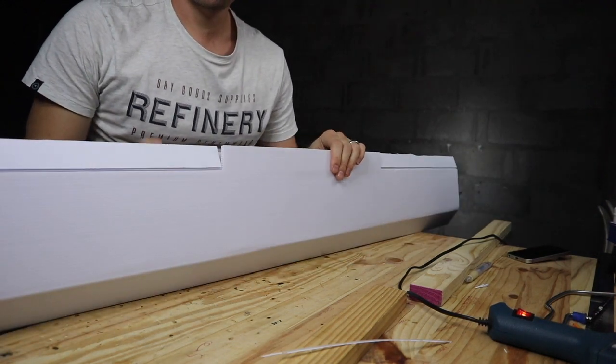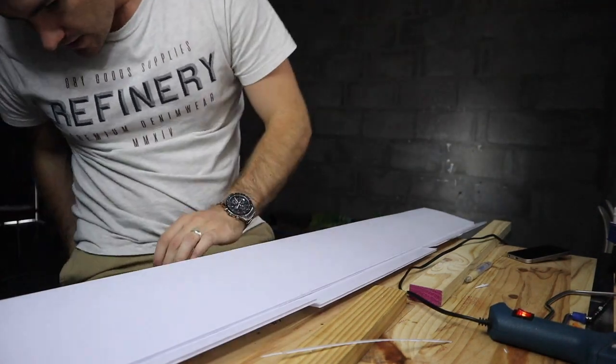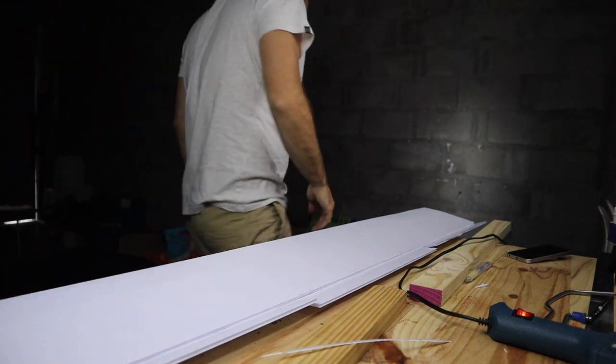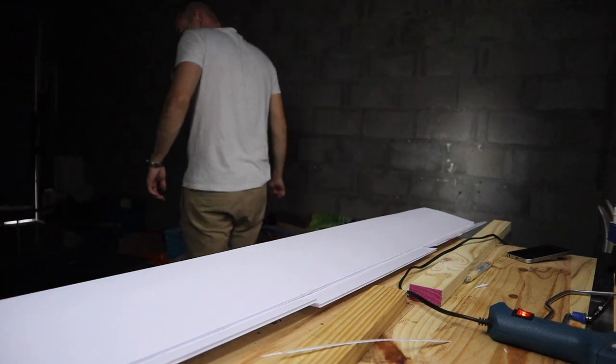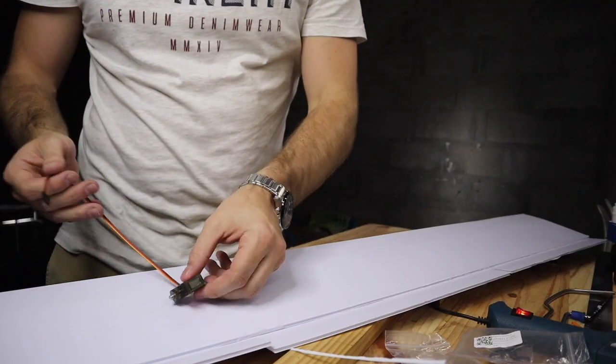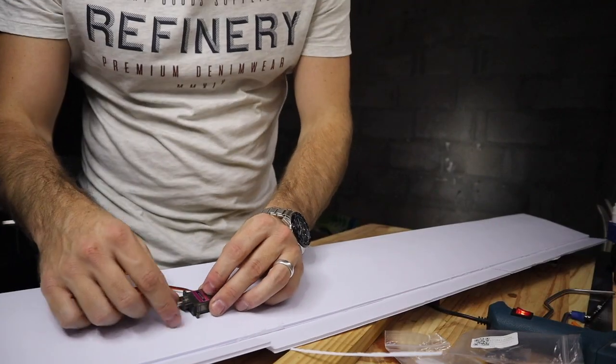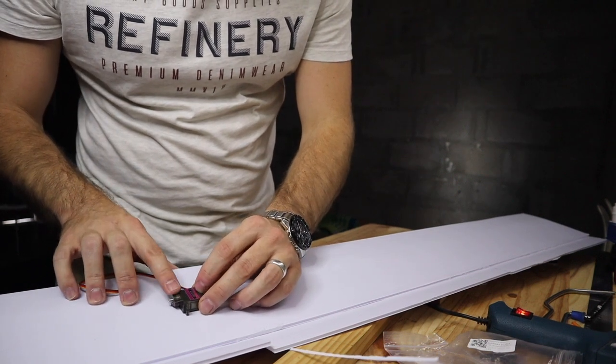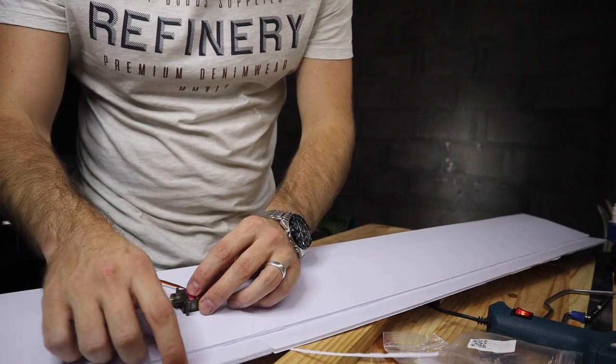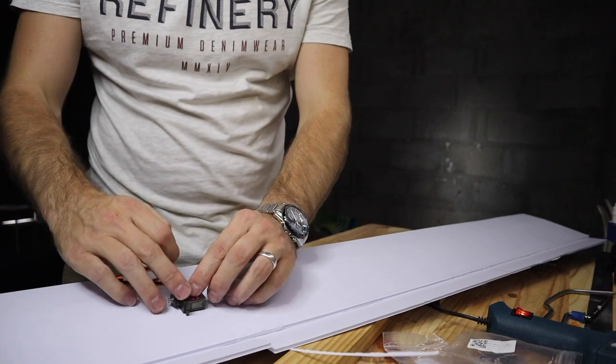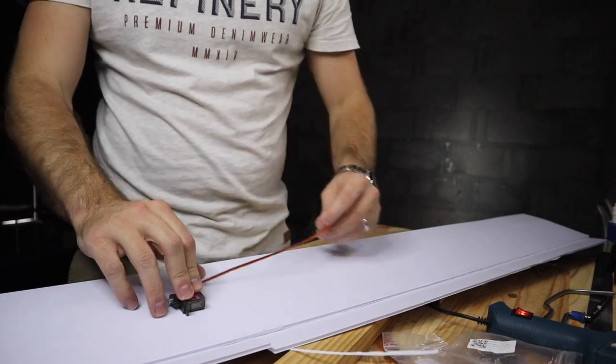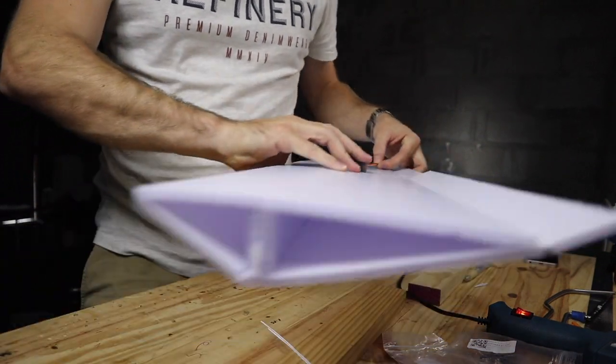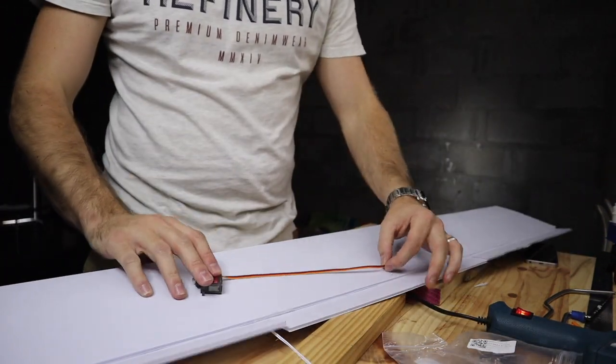Most probably, if I can find my servos, somewhere around here and countersink them into the lower surface of the wing. Yeah, that'll be perfect. Then I can run the leads inside of the wing because there's nice space in there as you can see, and then we are ready to go.